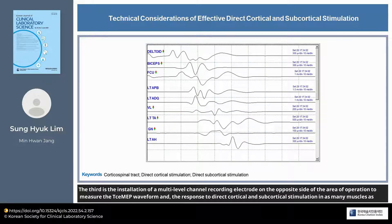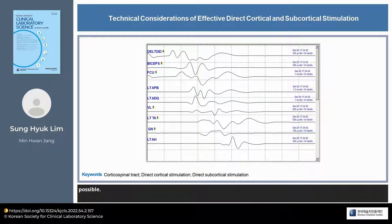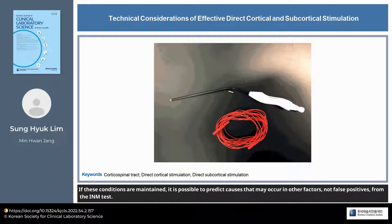The third factor is the installation of a multi-level channel recording electrode on the opposite side of the area of operation, to measure the TCE MEP waveform and the response to direct cortical and subcortical stimulation in as many muscles as possible. If these conditions are maintained, it is possible to predict causes that may occur from the INM test in other factors, not false positives.